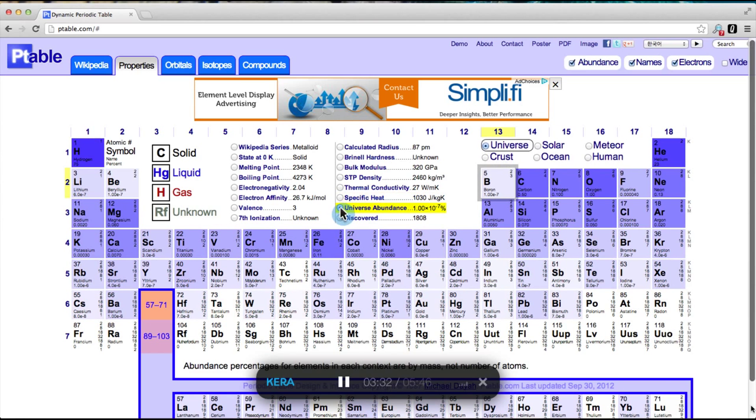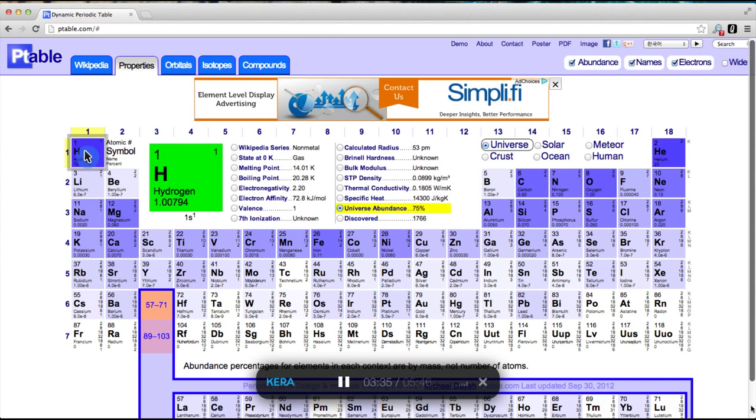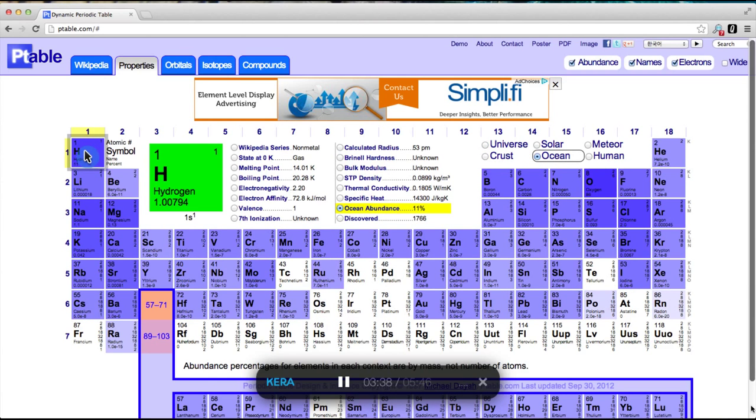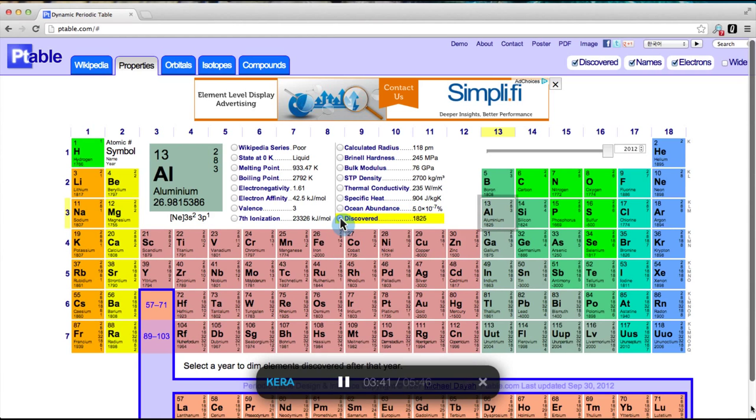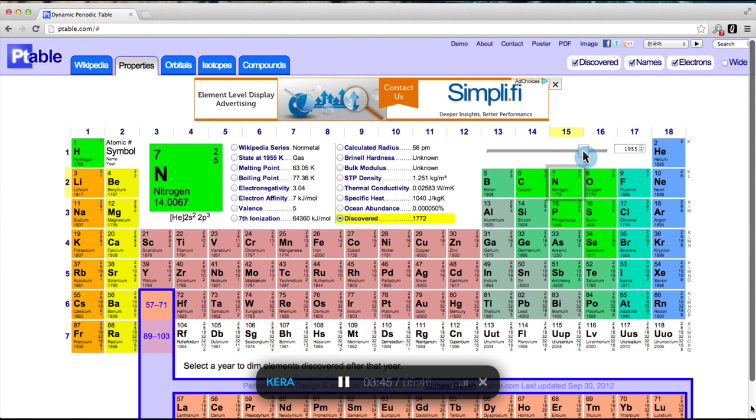Abundance is interesting. Here we can see the universe is 75% hydrogen by mass, and the oceans are 11% hydrogen and 86% oxygen. The discovered slider shows the years elements were isolated. Sliding back from this year dims the elements that were not yet discovered at the time.